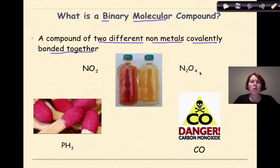So let's look at some examples here. We have NO2, N2O4, pH3, and CO. So all of these would be considered binary molecular compounds.